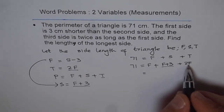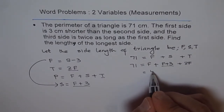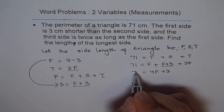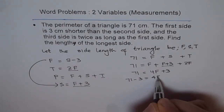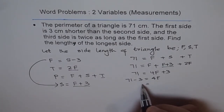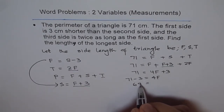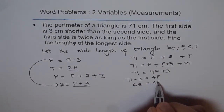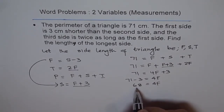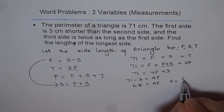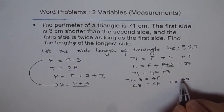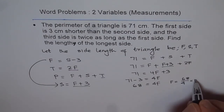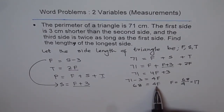Now let's combine: 1 plus 1 plus 2 gives 4F, plus 3, equals 71. Taking 3 to the other side: 71 minus 3 equals 4F, so 68 equals 4F. Dividing both sides by 4, F equals 68 divided by 4, which is 17. So the first side is 17 cm.